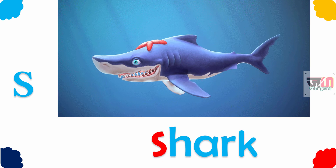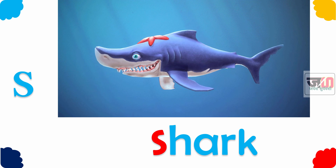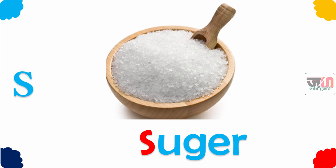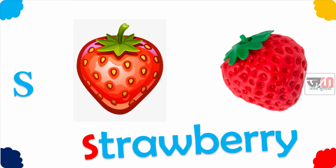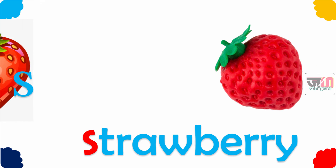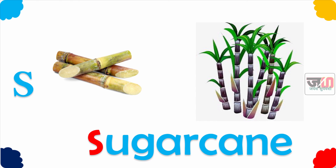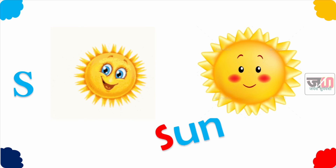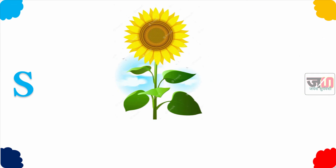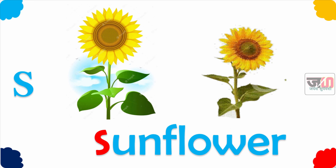S for Shark. Shark means masa. S for Sugar. Sugar means sakhar. S for Strawberry. Strawberry heek per. S for Sugar Cane. Sugar Cane means oos. S for Sun. Sun means surya. S for Sunflower. Sunflower means surya.